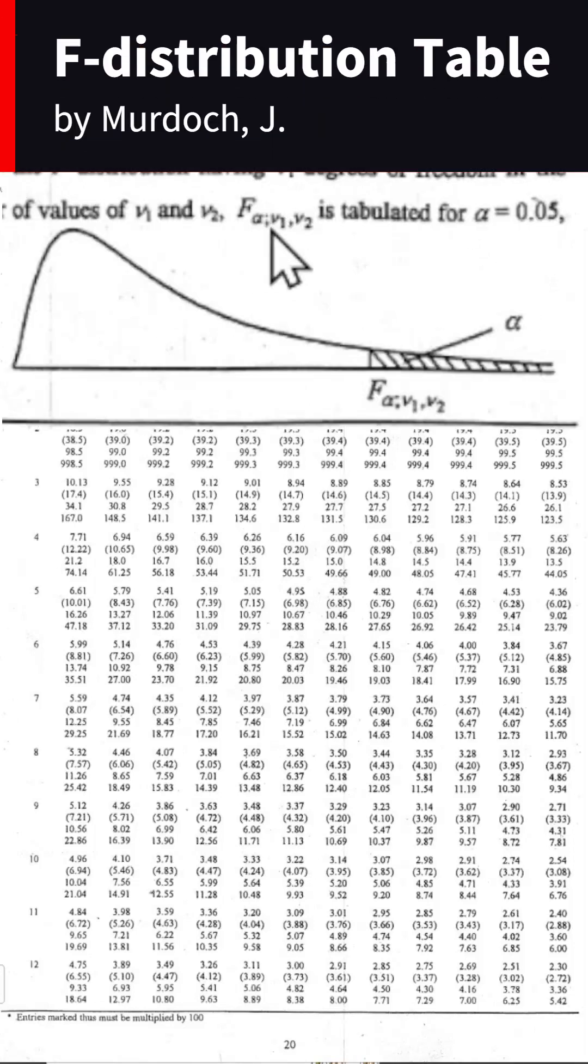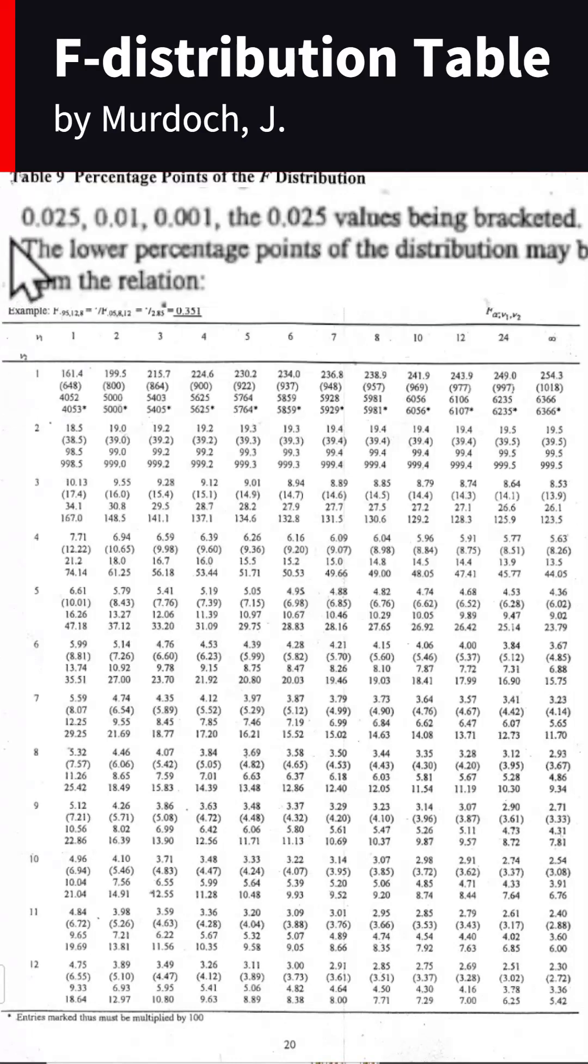From the description, we can see that the F value is tabulated for alpha equal to 0.05, followed by 0.025, 0.01, and 0.001. And the 0.025 values being bracketed.